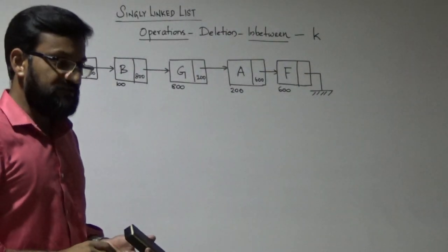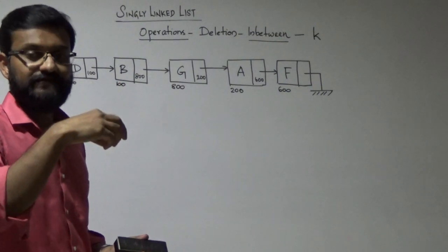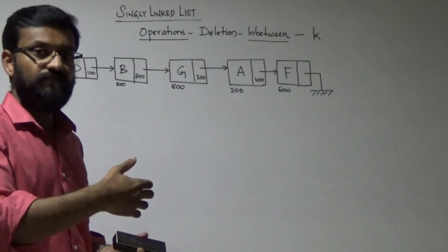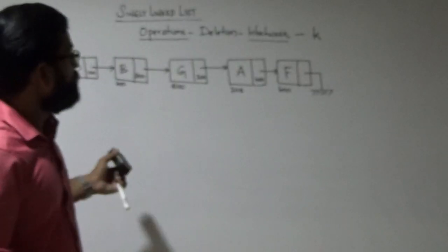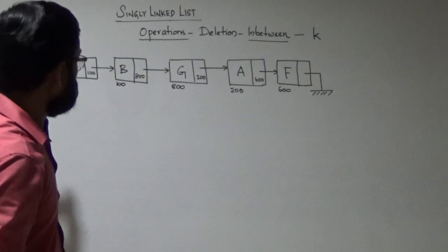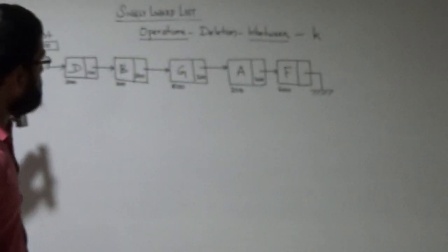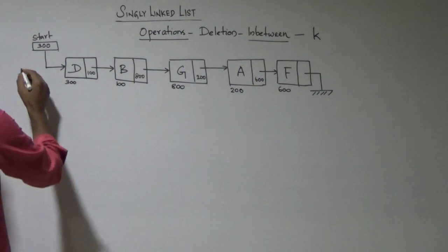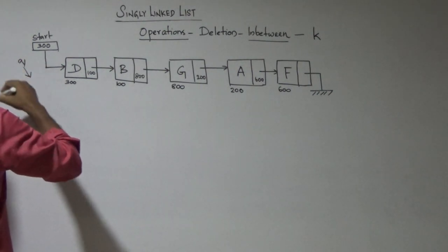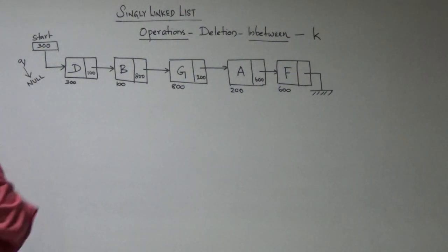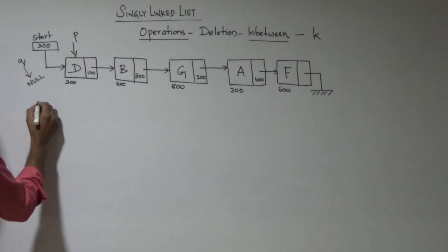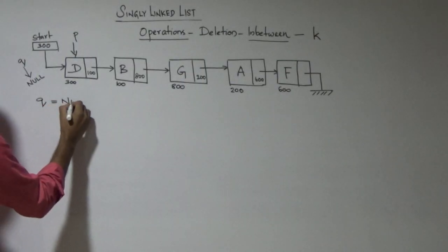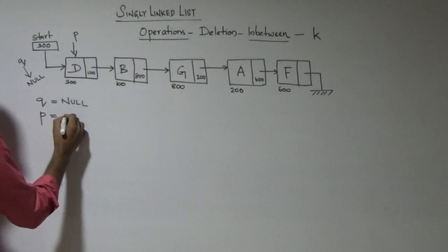You have to check whether the node to be deleted is present in the singly linked list or not. If it is not present, display the message 'node does not exist.' Otherwise, delete that node. To write this algorithm, you need to use two pointers: pointer q, initialized to null, and pointer p, initialized to start.